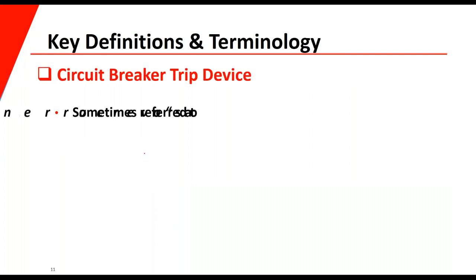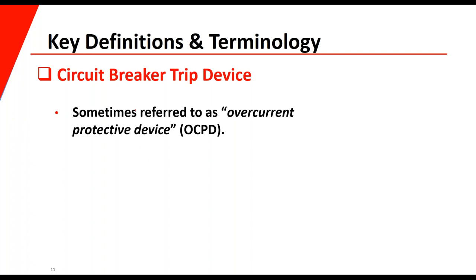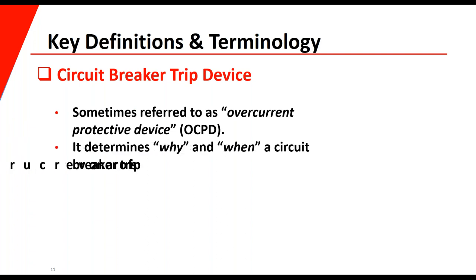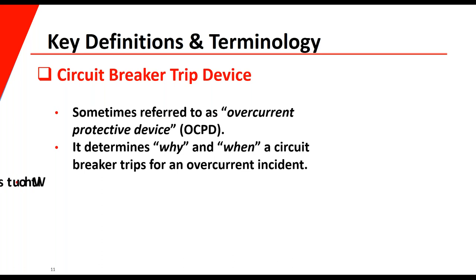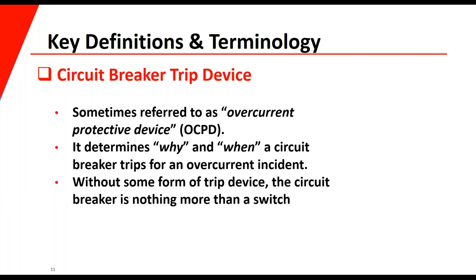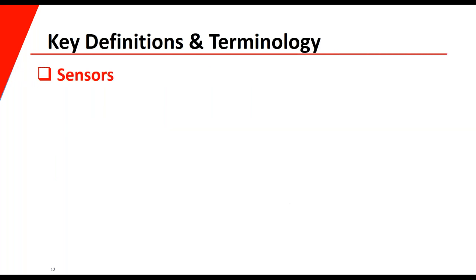The circuit breaker trip devices, sometimes referred to as overcurrent protection devices or OCPDs, determine why and when a circuit breaker trips for an overcurrent incident. Without a trip device, the breaker is nothing more than a switch. With a trip device, we can protect the circuit from an overcurrent incident and trip the breaker at a given time.